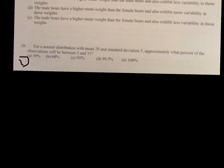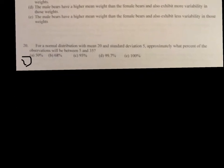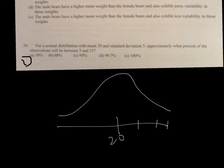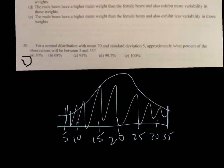If you look at this, on number 20, for a normal distribution with an average of 20 and a standard deviation of 5, what percent of the observations will fall between 5 and 35? That's your empirical rule. So, basically, if you were to draw that, here would be 20, 1, 2, 3 standard deviations, 1, 2, 3 standard deviations. Well, that's 25, 30, 35, that's 3 standard deviations to the right, and then 15, 10, 5, that's 3 standard deviations to the left. Empirical rule says that is 99.7, which is D.